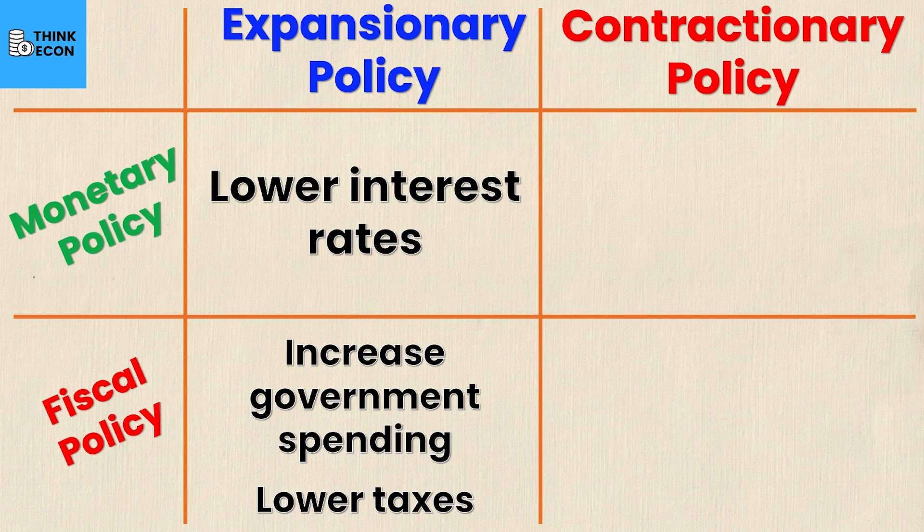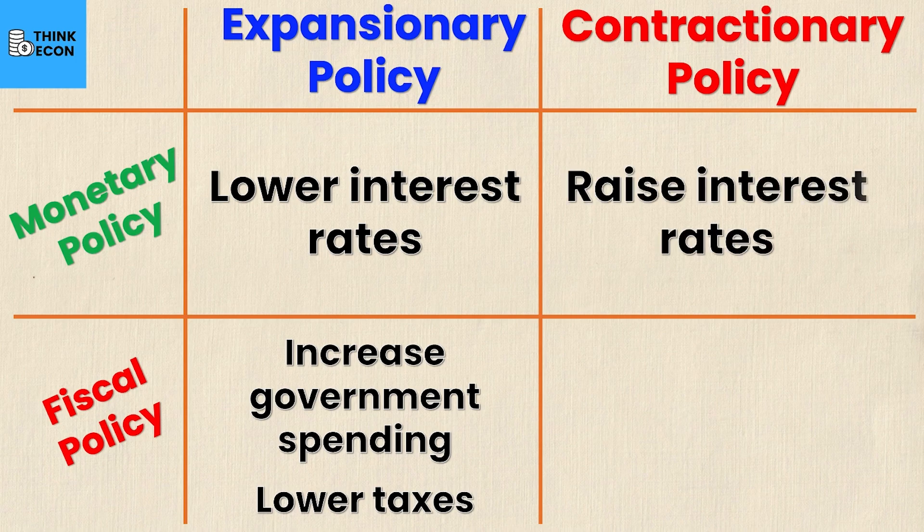But what about the flip side — contractionary times, when you're trying to control inflation and maintain price stability? For monetary policy, to manage inflation we would raise the interest rate. This discourages people from spending because they should be putting money in a bank and earning interest, and it makes borrowing more expensive so people aren't as inclined to take out loans. This slows down demand and spending — a contractionary effect — all through manipulating the interest rate.